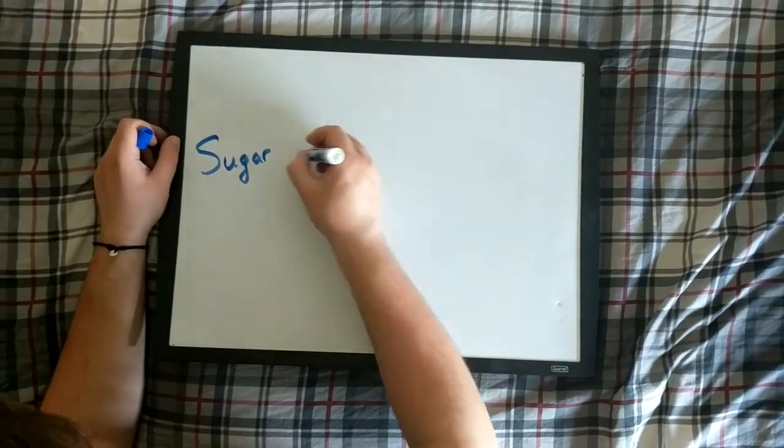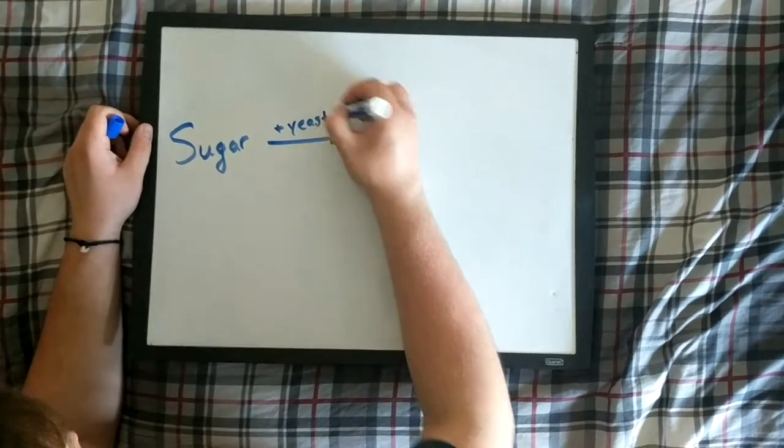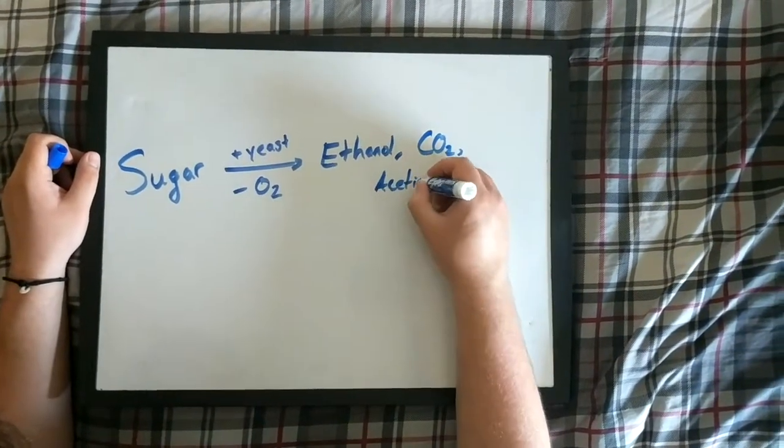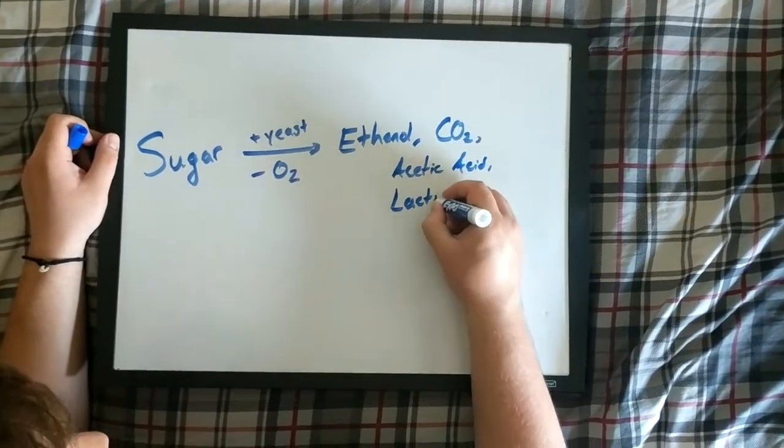In every single one of these foods or drinks, we allow yeast, natural or otherwise, to act on some type of sugar in a low oxygen environment, producing some combination of ethanol, carbon dioxide, lactic acid, and so on.